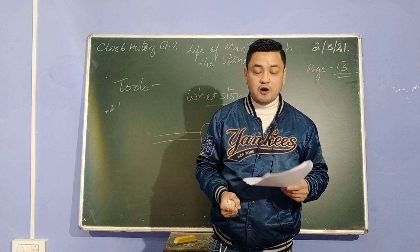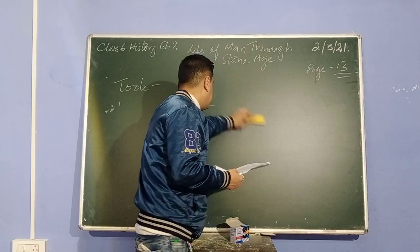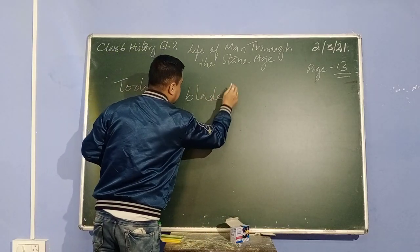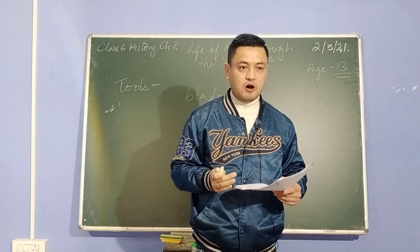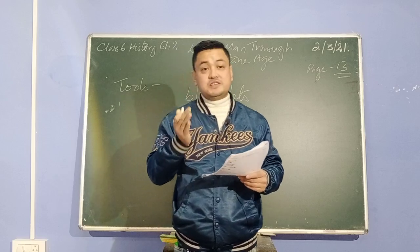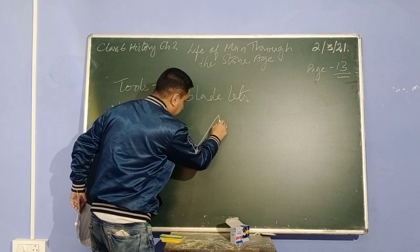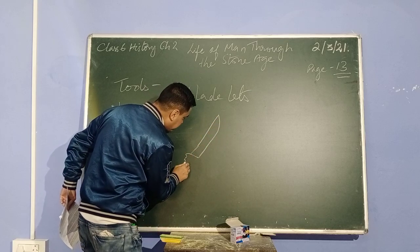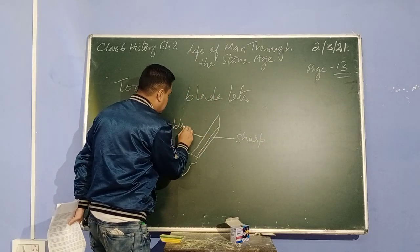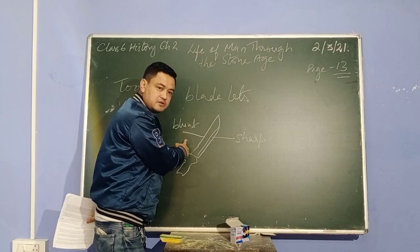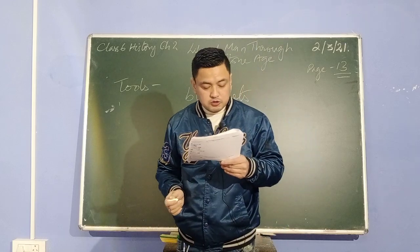Other tools were bladelets. Bladelets are flat blade-like tools, similar to knives, but made of stone in the Neolithic age, not iron. A bladelet is sharp on one edge and blunt on the other — you can cut meat from the sharp side but not from the blunt side.